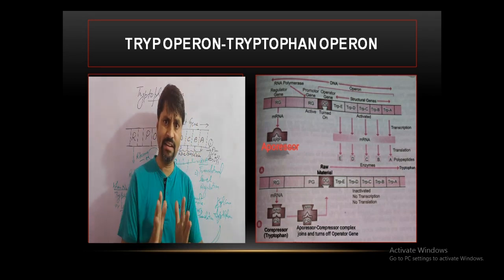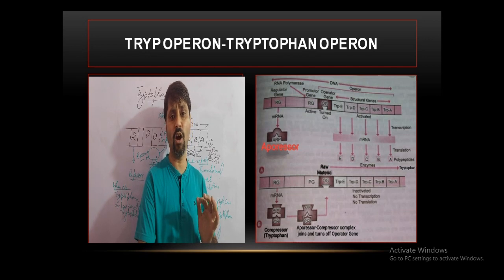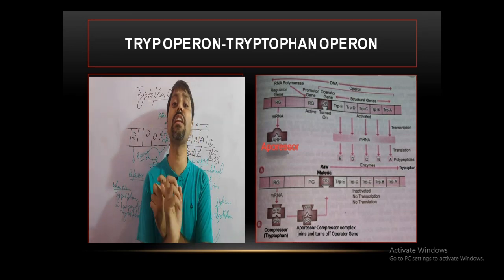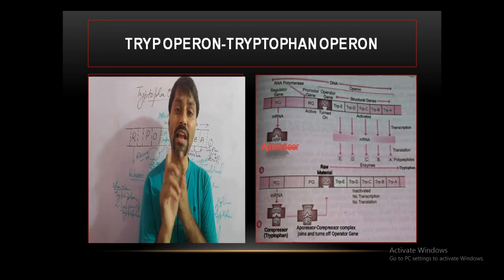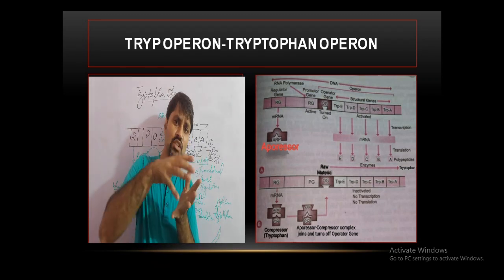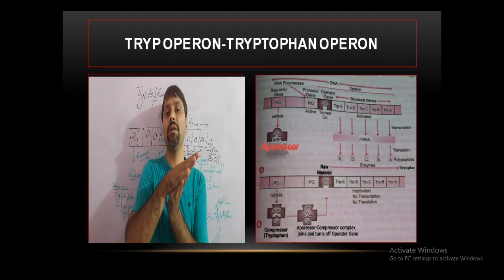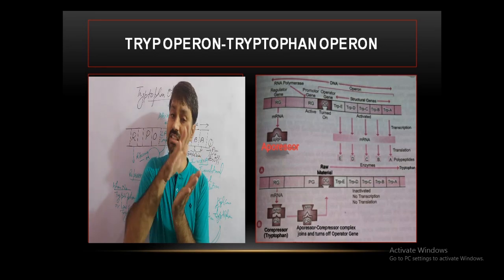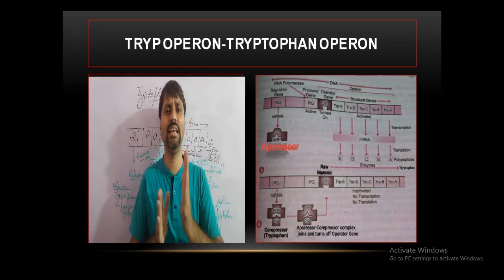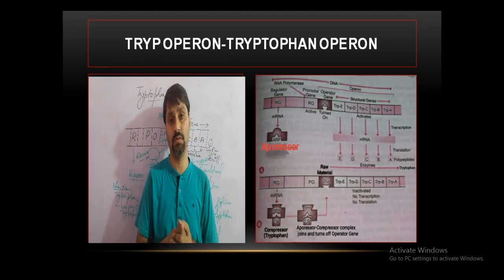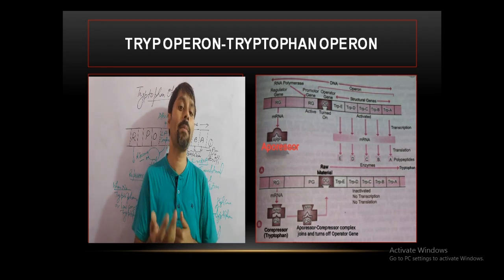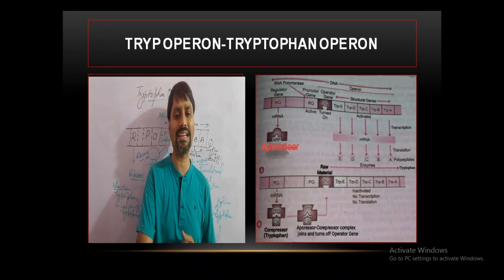Till now we have studied that if RNA polymerase does not move to the structural gene, transcription will not occur — regulation occurred at the transcriptional level. But regulation, or gene regulation, may also occur at the translational level. This is not shown in the previous picture; in the next figure I will show you a one more complex — the attenuator complex, also called the leader attenuator complex.